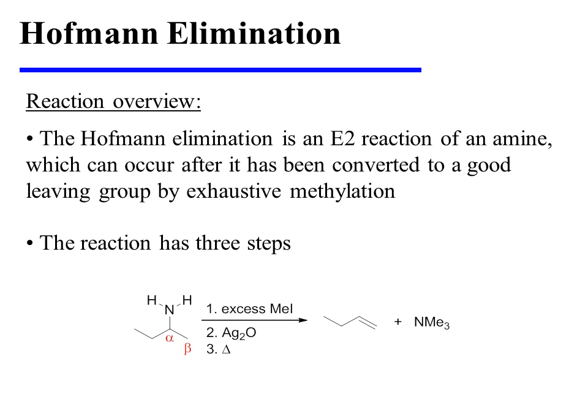The Hoffman elimination is an E2 reaction of an amine, and it can occur after the amine has been converted to a good leaving group through exhaustive methylation. The reaction has three steps.